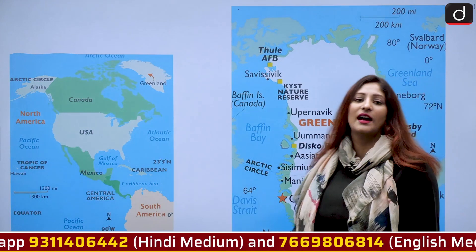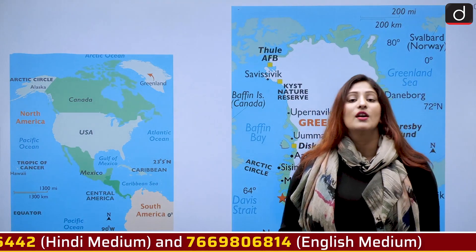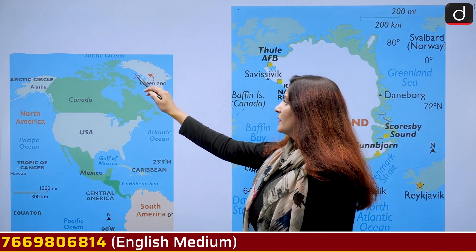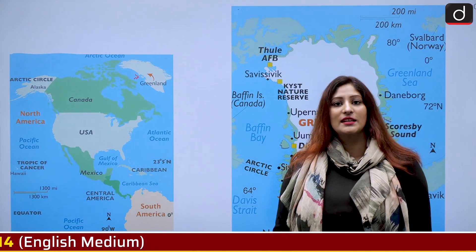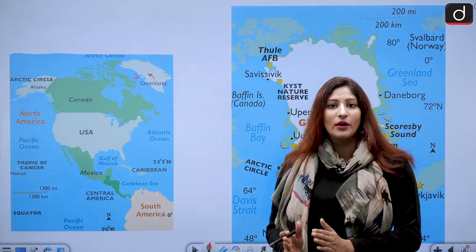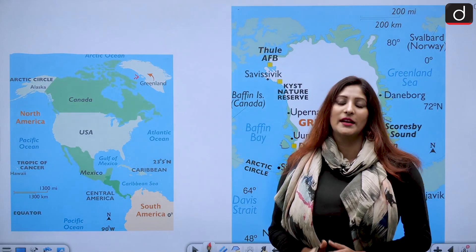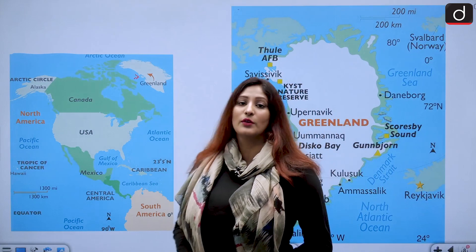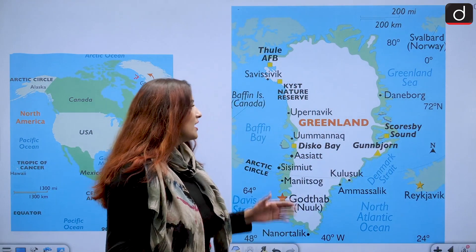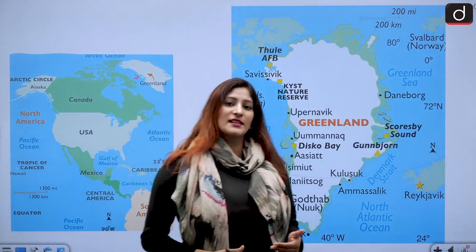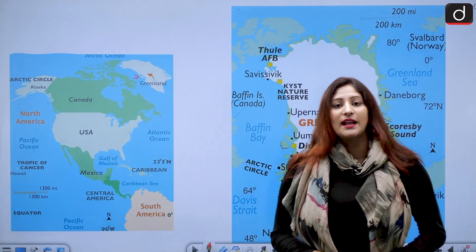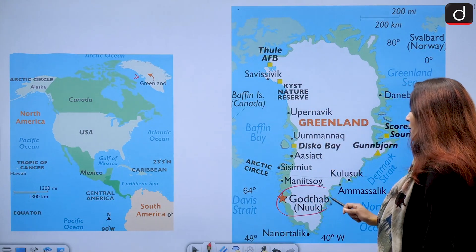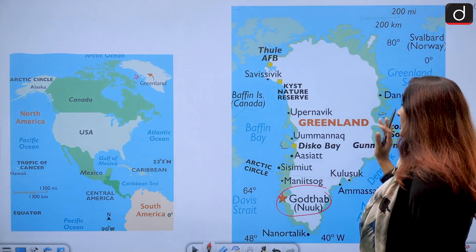The report also discusses the melting of Greenland ice sheets. Greenland is located northeast of Canada and is geographically part of the North American continent, but geopolitically it is part of the Kingdom of Denmark. It has been an autonomous region since 2009, and its capital city is Nuuk, formerly known as Godthåb.